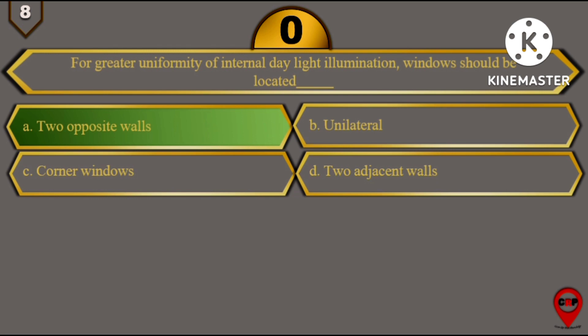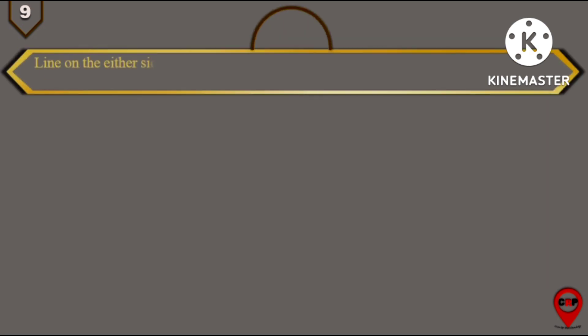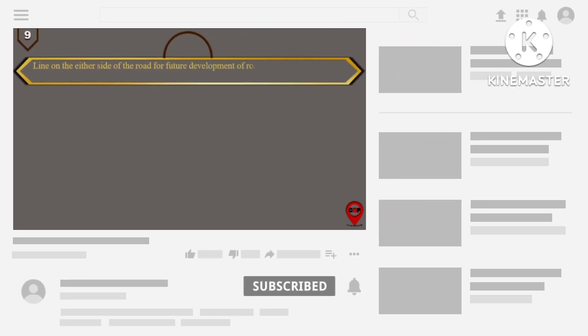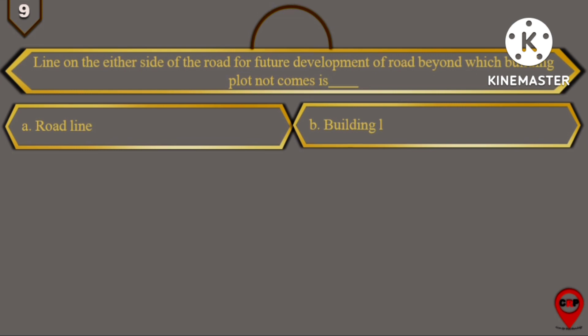Question number 9: For future development of road beyond which building plot not comes is. Options are: A. Road line,